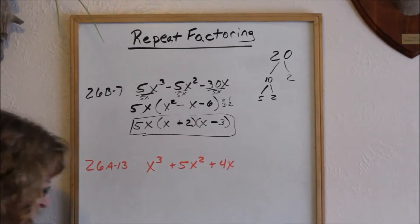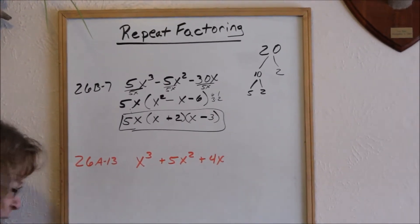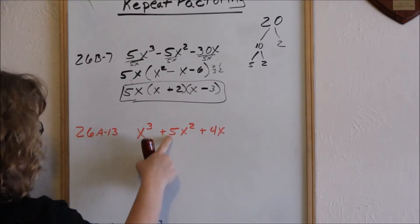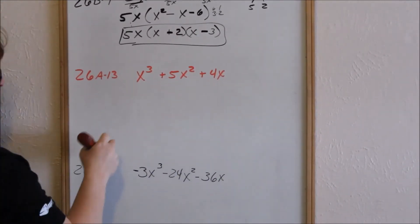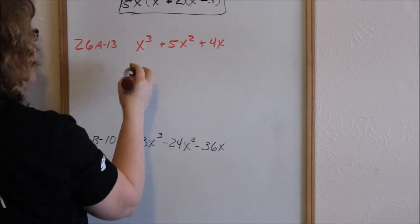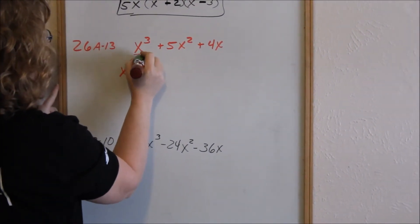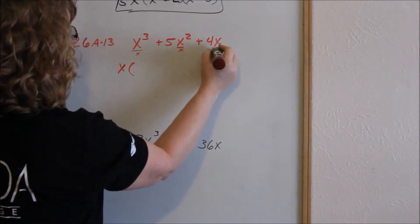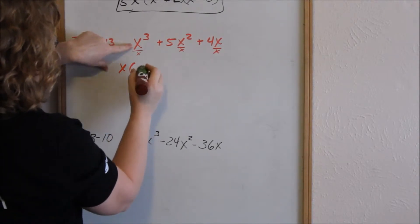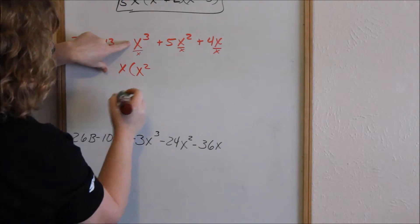Now look at problem 26B8. Always look to see what you can factor out first. Looking at my numbers, I can't factor anything out of my numbers, but I can factor out of my x's. The most I can factor out of each one is just an x — basically dividing an x out of every term. Pulling an x out of the first term leaves x squared, because x times x squared gives me x cubed.